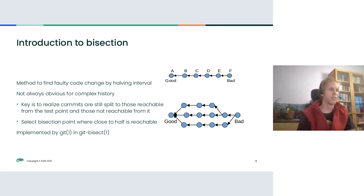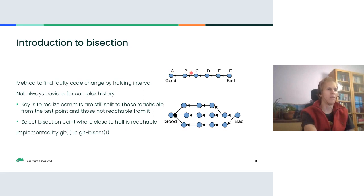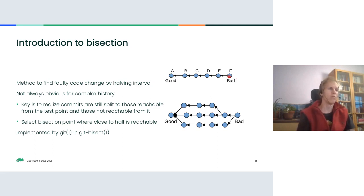Essentially, if you have some code changes — for simplicity, assume a simple situation where you have commit A, which gets updated to commit B, then modified further to C, D, E, and F — a linear history like this. You know that at A something was good and at F something is bad, so something broke, and you want to find which of the changes actually broke the test or the code.